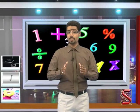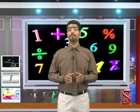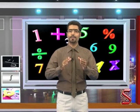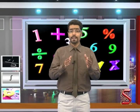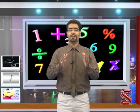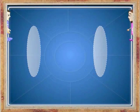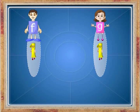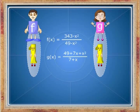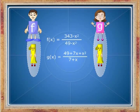Let us check whether f and g are equal. We will find the image of all the elements under f and then under g separately. If we get the same image for elements of A by both functions, then they will be equal. Here, f and g are functions from A to the set of real numbers, such that f of x equals (343 minus x cubed) divided by (49 minus x squared), and g of x equals (49 plus 7x plus x squared) divided by (7 plus x).